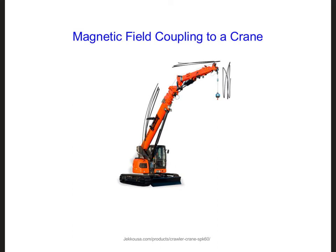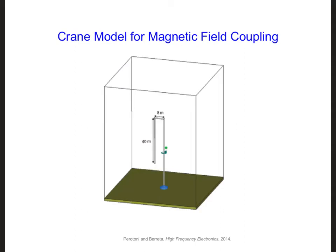As this cable extends downwards to pick something up, it starts to look like a loop antenna. We could account for this in our FDTD model as shown here, and this is what the group implemented for their study.